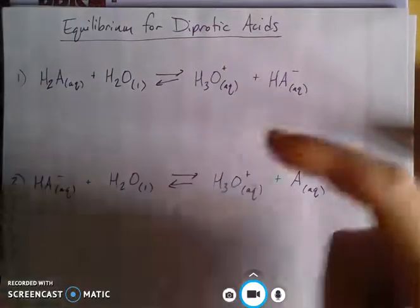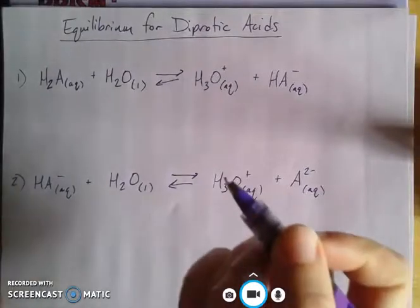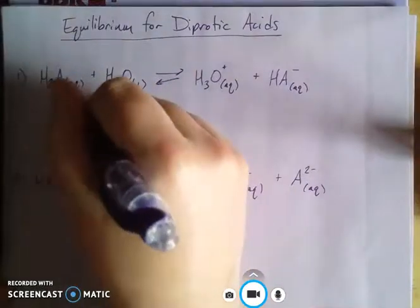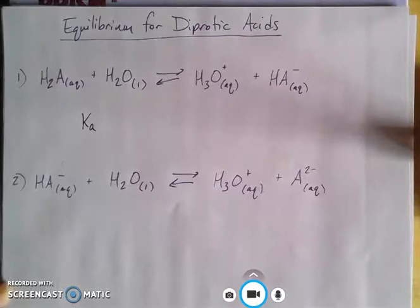Because we know that we can add stepwise reactions together, we could talk about an overall reaction, but let's first think about the equilibrium constants for each of these processes. There's going to be some sort of Ka associated with this first one. Remember, the subscript 'a' refers to the fact that it's an acid.